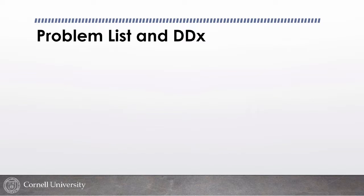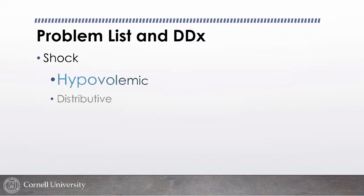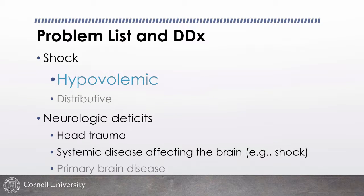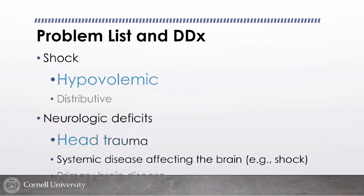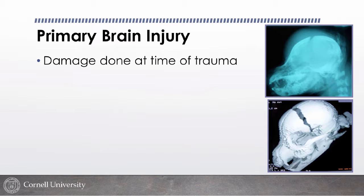Problem list and differentials: Damien was clearly in shock — based on history, strongly suspected hypovolemic shock, and clinical signs fit. He had neurologic deficits and evidence of head trauma. I couldn't rule out that his shock was contributing to his mental status — poor brain perfusion alone can cause obtundation. But there was good evidence of head trauma as well, so traumatic brain injury and primary brain trauma were the top differentials. Primary brain disease like a tumor was far less likely.